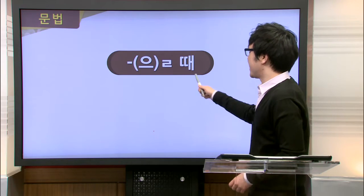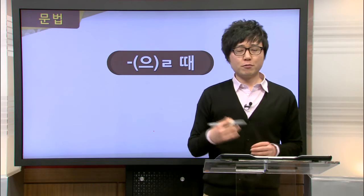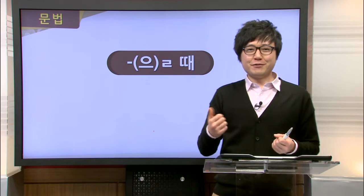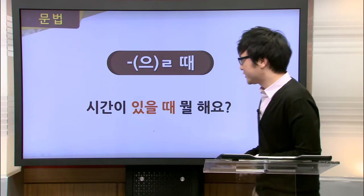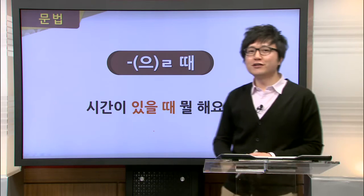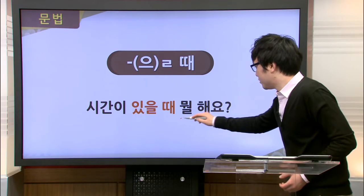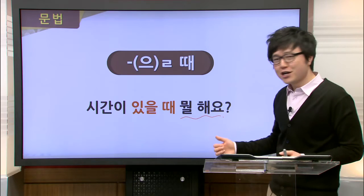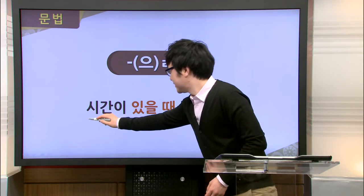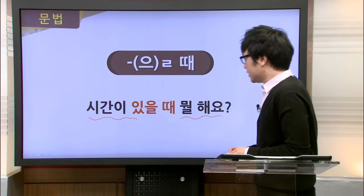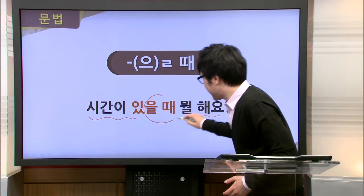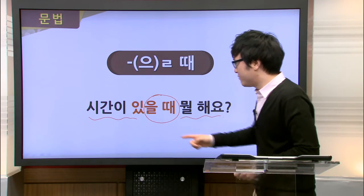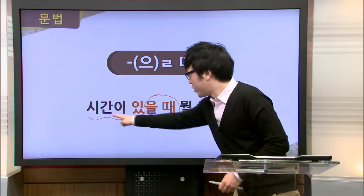Our first grammar point is 을 때. This 을 때 is used to express the time or moment a certain action happens — in English, think of it as 'when something, then something.' For example: 시간이 있을 때 뭘 해요? — this is what Jimin asked her friend. The back part 뭘 해요 means 'what do you do?' and the front part 시간 있다 means 'to have time.' By adding 을 때, we get 시간이 있을 때 — 'when you have time.' Combined: 시간이 있을 때 뭘 해요? — when you have time, what do you do? Please repeat: 시간이 있을 때 뭘 해요?